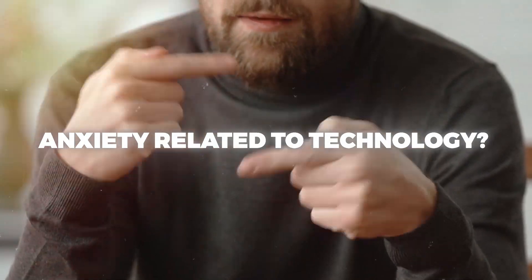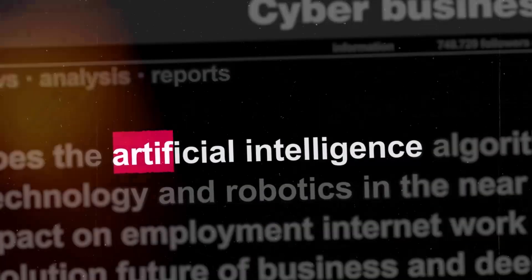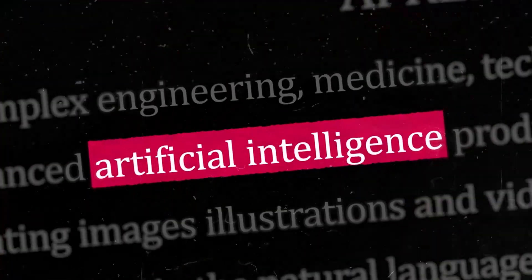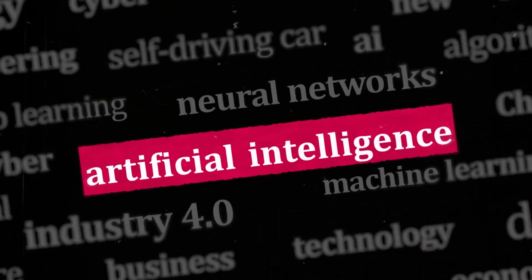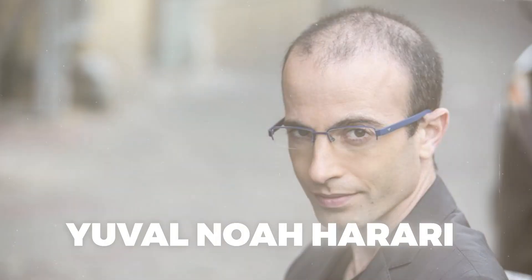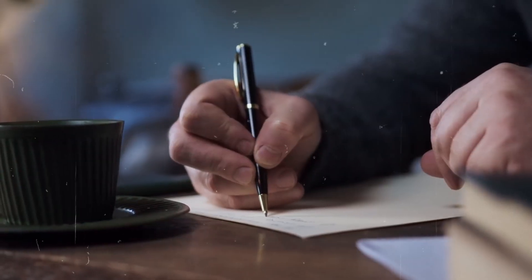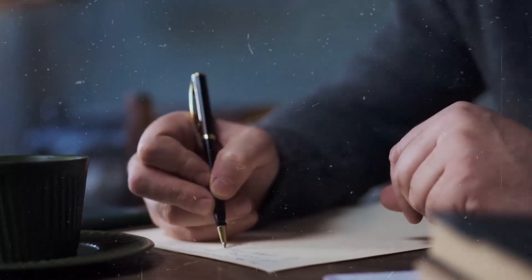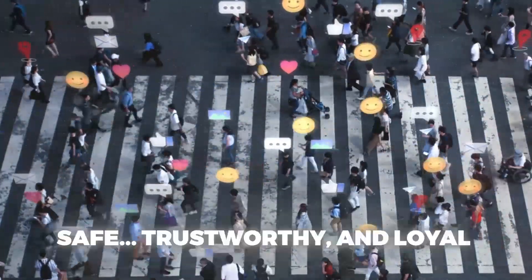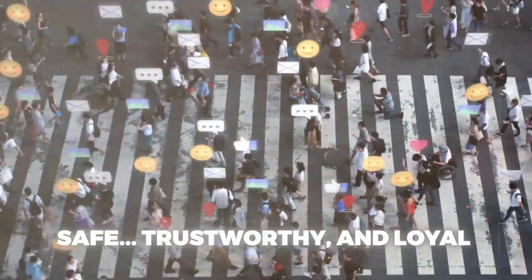Have you recently experienced anxiety related to technology? If that's the case, you're not alone. The UN has asked all states to enact regulations aimed at controlling artificial intelligence. Prominent figures, including Elon Musk and Yuval Noah Harari, signed an open letter urging the suspension of research into the most sophisticated AI and the implementation of safeguards to keep it safe, trustworthy, and loyal.